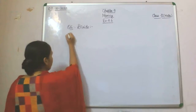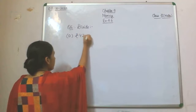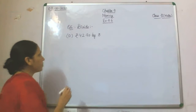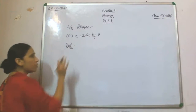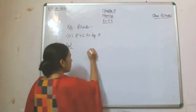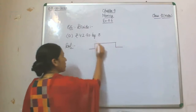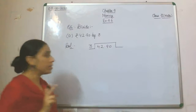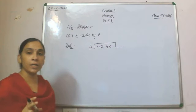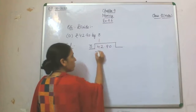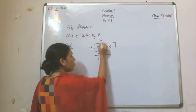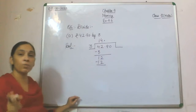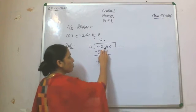Part A: Rupees 42 and 90 paisa divided by 3. Now, when doing the solution, we will make the division symbol and write down the amount — 42.90 — divided by 3. After division, whatever quotient we get will be written with the symbol of rupee. So: 3 ones are 3, 1 will be remaining, 2 will get down. 3 fours are 12, and then this point will go into the quotient.